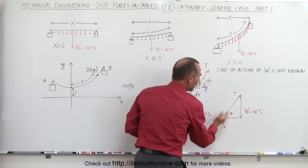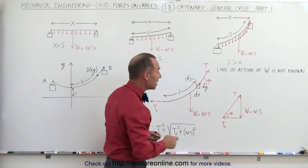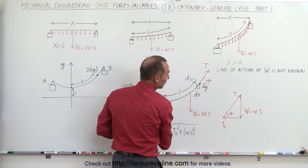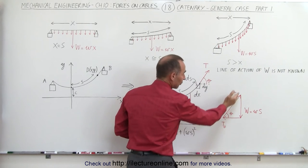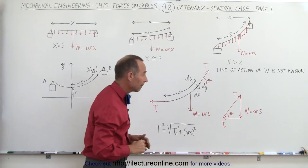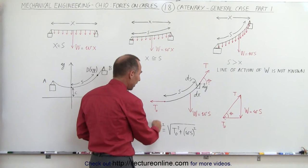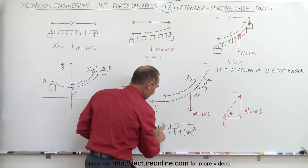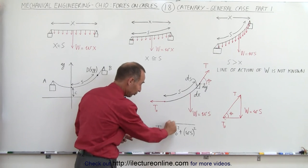T₀ is the tension at the lowest point in the cable in the horizontal direction. T exists at any other point on the cable, depending upon the angle. If that point is lower on the cable the angle will not be as large; if it is higher up the angle will be larger, and therefore the tension will increase depending upon where on the cable we're looking.